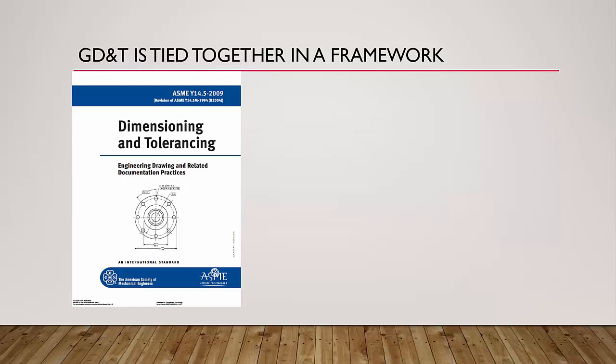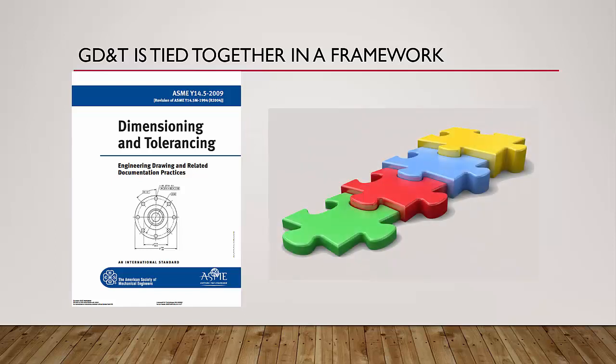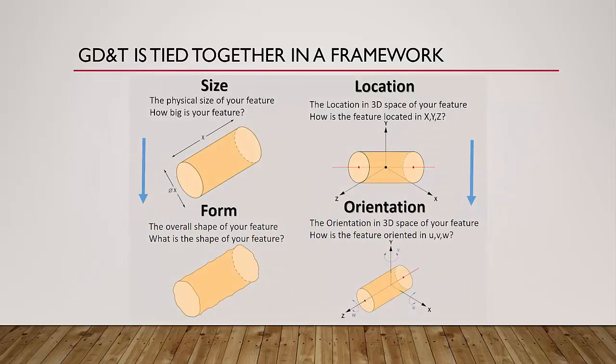The GD&T standard tries to cover every scenario you can possibly think of. Although necessary, this makes GD&T seem too broad and complicated. The good news is that there are simple rules that relate all of the symbols together in a framework that will allow you to understand and retain the information much easier. For example, there are really only four ways we can ever control something on our part: size, location, orientation, or form.